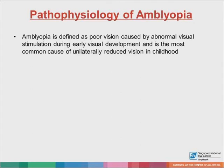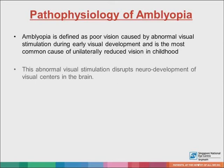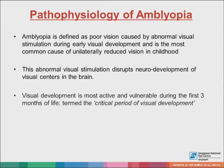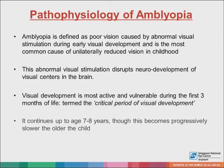Amblyopia is defined as poor vision caused by abnormal visual stimulation during early visual development, and is the most common cause of unilaterally reduced vision in childhood, with a prevalence of about 2% to 4% worldwide. It is important to note that this abnormal visual stimulation disrupts neurodevelopment of the visual centers in the brain, and this is most active and vulnerable during the first three months of life, termed the critical period of visual development. It continues up to age 7 to 8 years, though this becomes progressively slower the older the child.